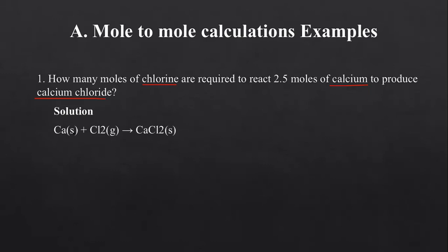Calcium is a solid at RTP. Chlorine is a gas, so that's why we write Cl2(g). Then you combine them — remember we looked at how to construct formulas. You write calcium, which has a valence of 2, and chlorine, which has a valence of 1. You interchange these two values and get CaCl2. That is how we find the formula for calcium chloride.